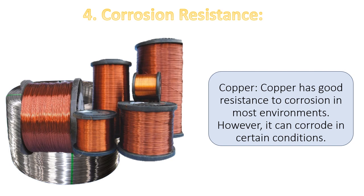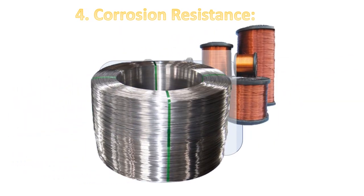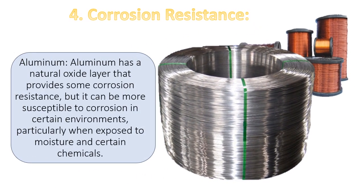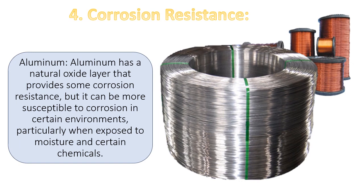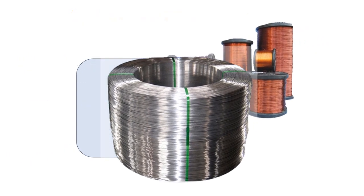4. Corrosion resistance. Copper has good resistance to corrosion in most environments, however it can corrode in certain conditions. Aluminum has a natural oxide layer that provides some corrosion resistance, but it can be more susceptible to corrosion in certain environments, particularly when exposed to moisture and certain chemicals.